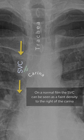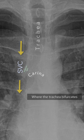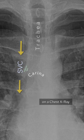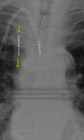On a normal film the SVC can be seen as a faint density to the right of the carina, where the trachea bifurcates. This means a central venous catheter should pass to the right of the carina on a chest x-ray.